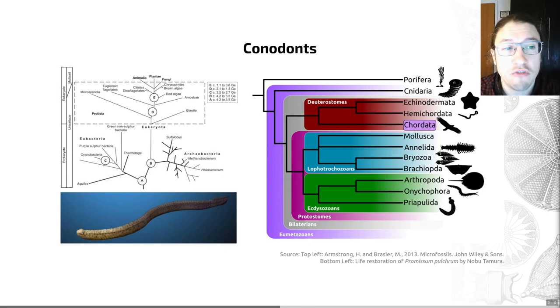...decreases in diversity in the Silurian and the late Carboniferous through to the Permian, with then a slight rebound early in the Triassic.